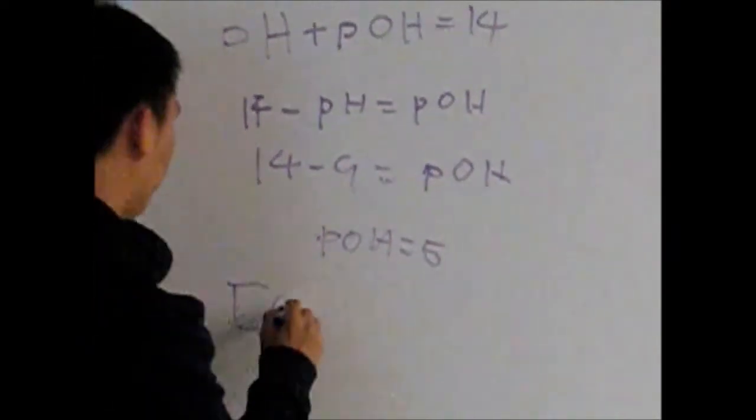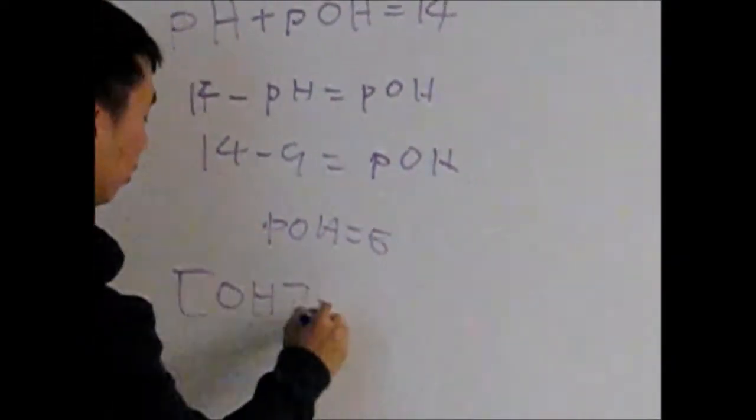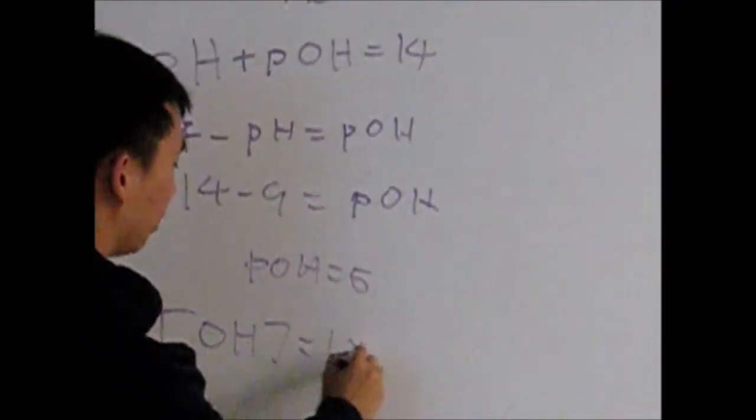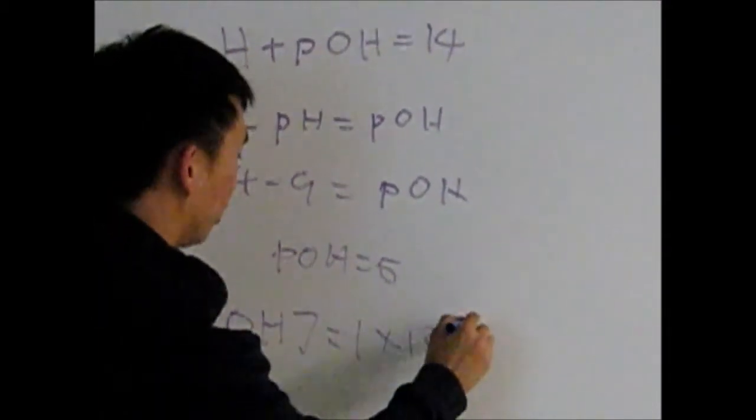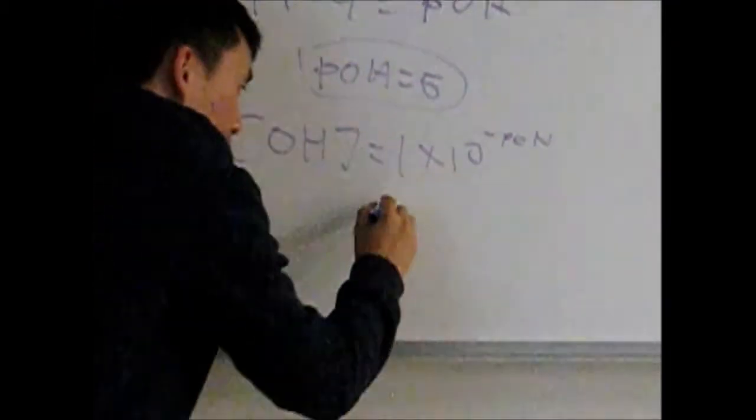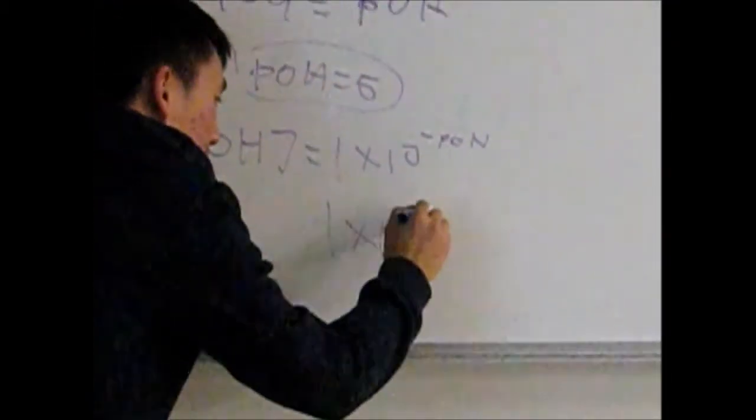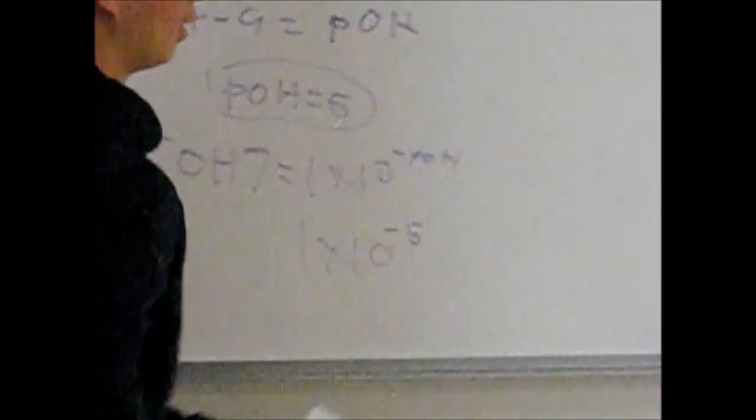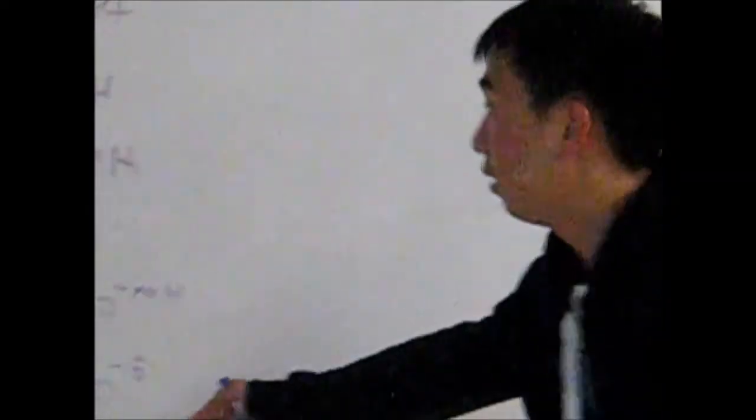Because now we have pOH, we can find the concentration of OH minus, which can help us later to find the kb. So 1 times 10 to the negative pOH is related to the OH, and that will give us 1 times 10 to the negative 5. Now that we have this relationship, we can make an ICE chart with the initial, change, and equilibrium.